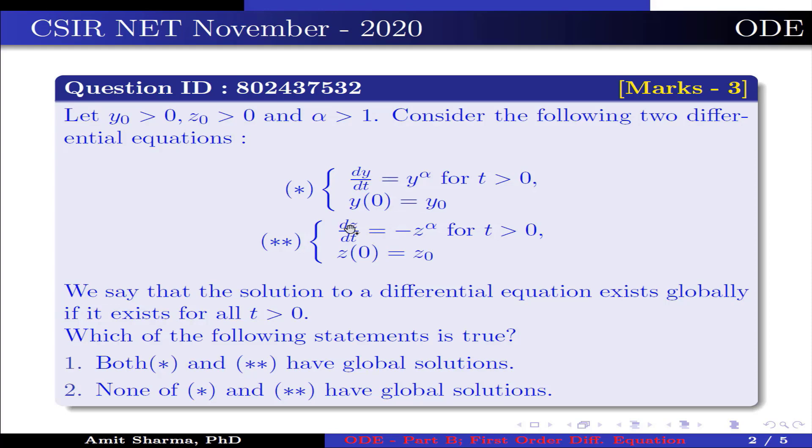dz/dt = -z^α for t > 0, z(0) = z₀, this is represented by (**). We say that the solution to a differential equation exists globally if it exists for all t > 0. Which of the following statement is true?